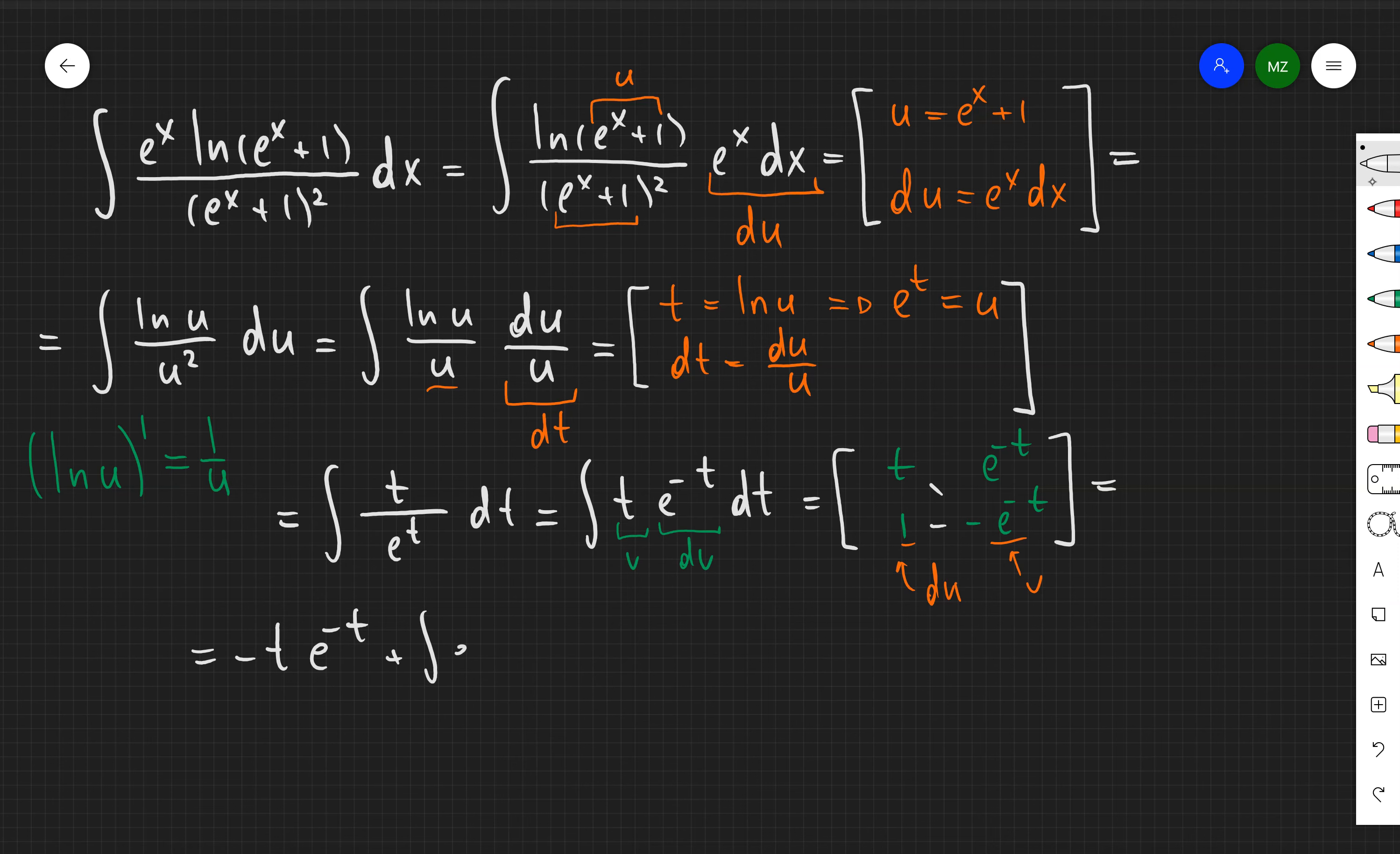And then applying the formula for integration by parts I'm going to obtain negative t times e to the negative t plus the integral of the exponent or in other words negative t times e to the negative t minus my exponent plus a constant c.